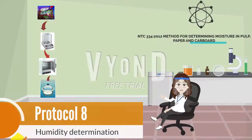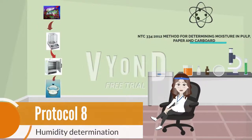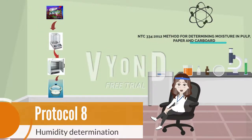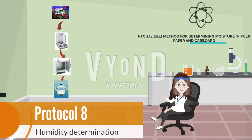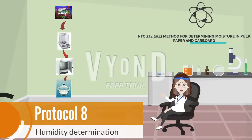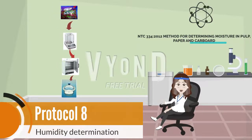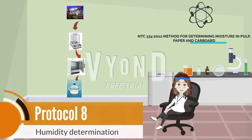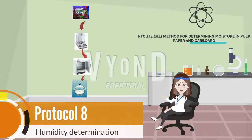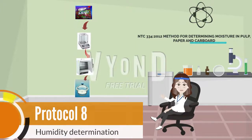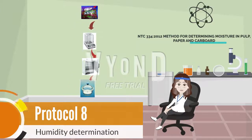Protocol eight is moisture determination. The procedure is carried out based on NTC 334-2012. This test is important as it determines the amount of water present in a sample. In the blackberry jam, the percentage of humidity is 86.23% per 100 grams.